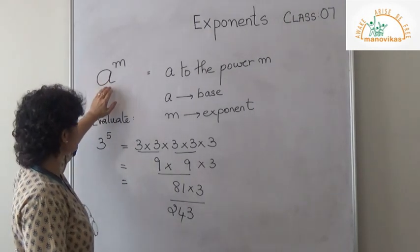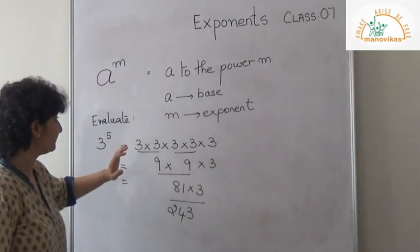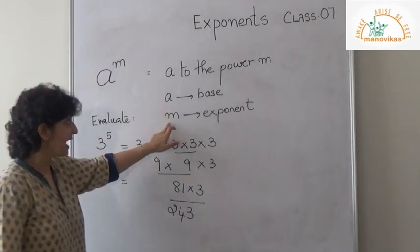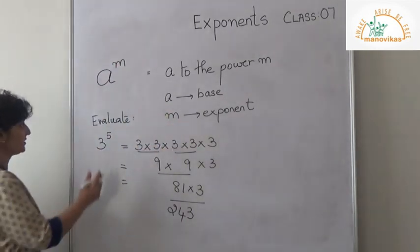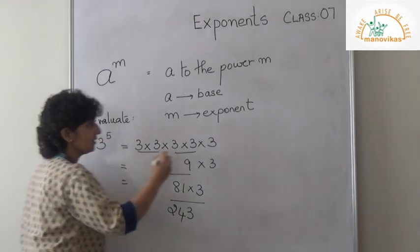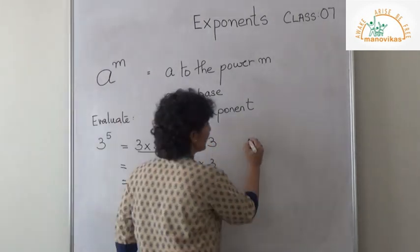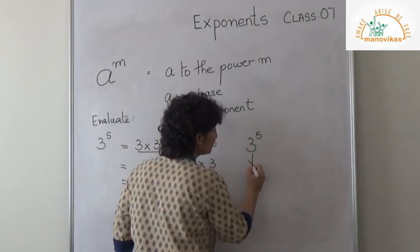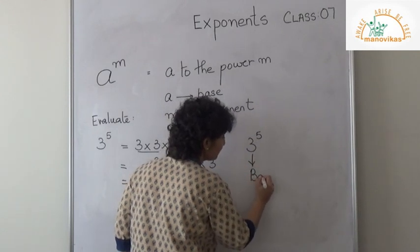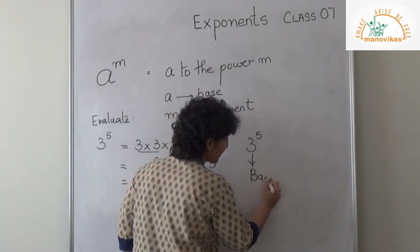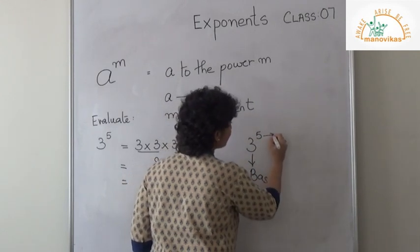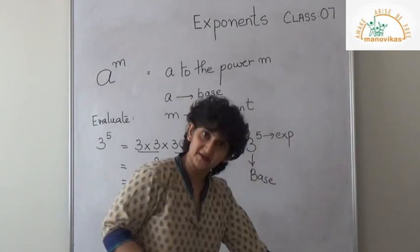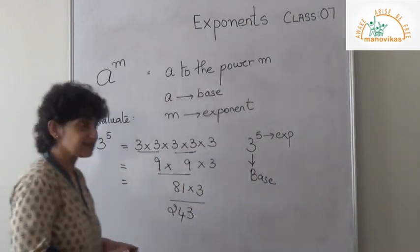Whenever you say A to the power M, A is your base and M is your exponent. So here, if I say 3 to the power 5, 3 is my base and 5 is my exponent. Is that clear?